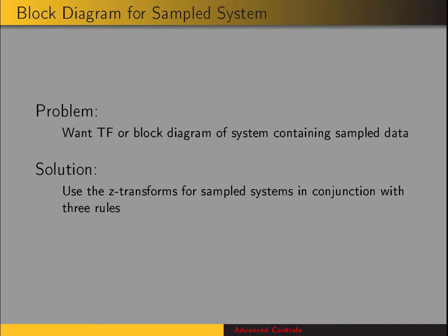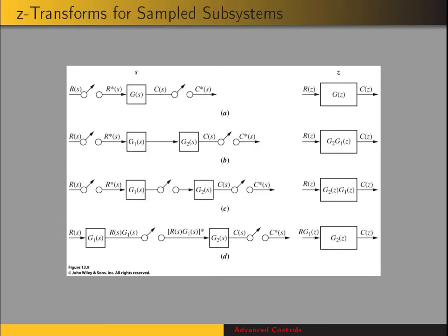Here are pictures depicting the Z-transforms for sampled systems being referred to. If we have a system G of S with sampled input and sampled output, then the Z-transform is just G of Z, and the input is R of Z, and the output is C of Z.